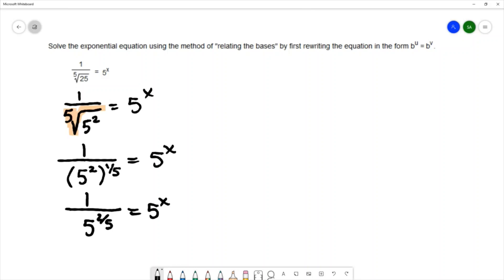And then finally, because I have all of this in the denominator, I can use negative exponents to move this factor into the numerator. We would write this as 5 to the negative 2/5ths equals 5 to the x.